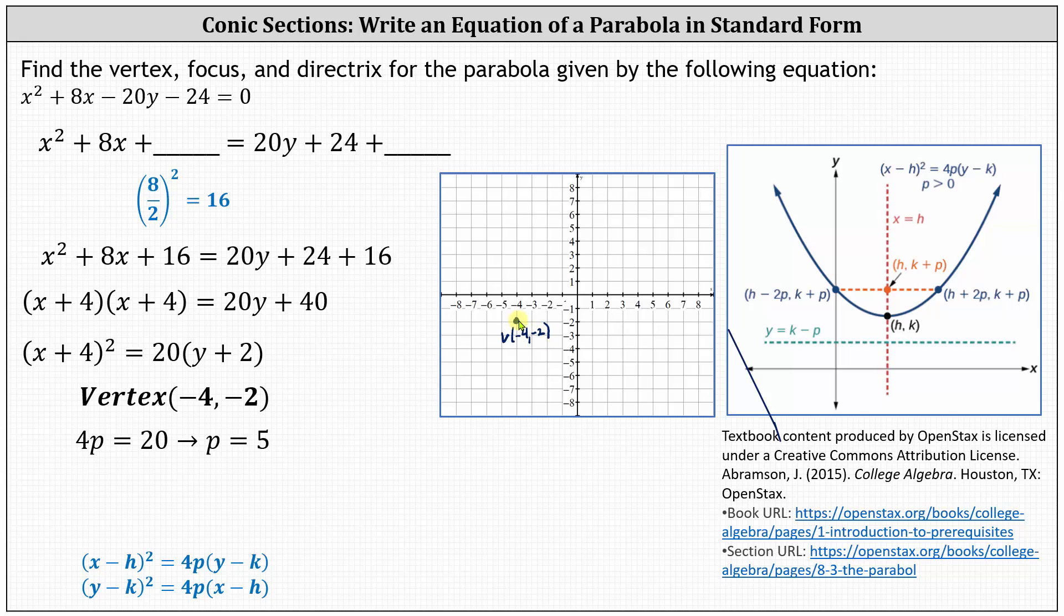Which means to find the focus, we add five to the y-coordinate of the vertex. We're just moving up five units from the vertex. We can see the focus is going to be this point here, negative four comma three. But let's go ahead and find this more formally. The focus is the point negative four comma negative two plus five. Simplifying, we have the focus is the point negative four comma three.